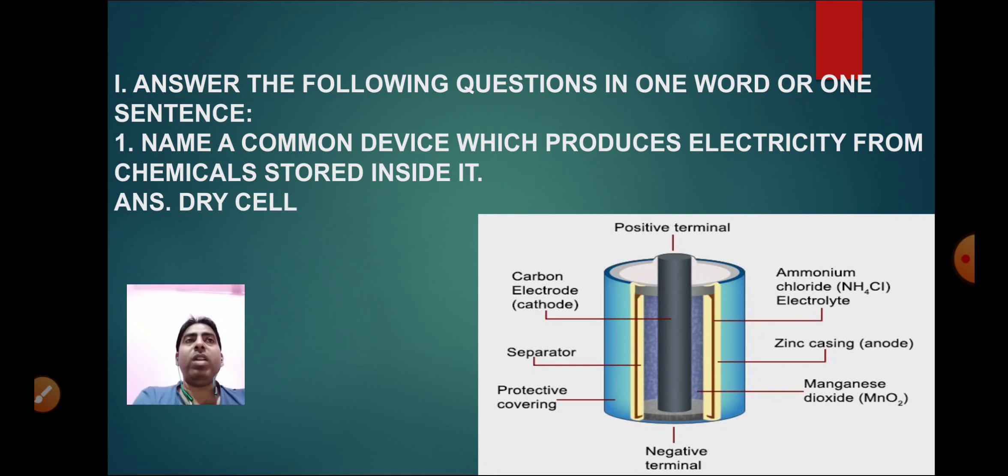Dry cell is also called electric cell. The cell consists of an outer covering made up of zinc. At the center of the container, a carbon rod with a metallic cap that is made up of brass. This carbon rod is surrounded by a mixture of magnesium dioxide and powdered charcoal, that is carbon, pure carbon.